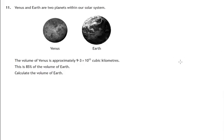Hi, Mr. Corsi here. In this question we're told that the volume of the planet Venus seems to be 9.3 times 10 to the power 11 cubic kilometres and we're told that that's 85% of the volume of the earth and asked therefore to calculate the volume of the earth.